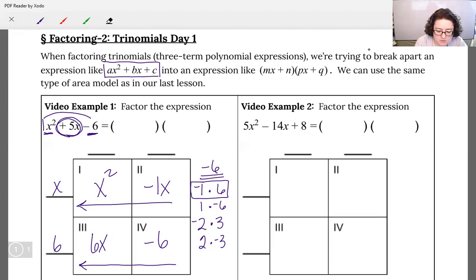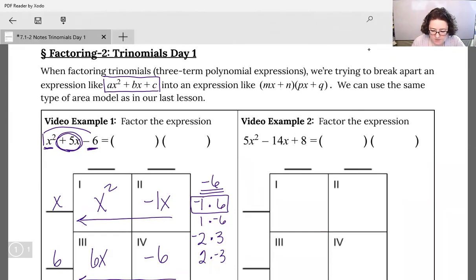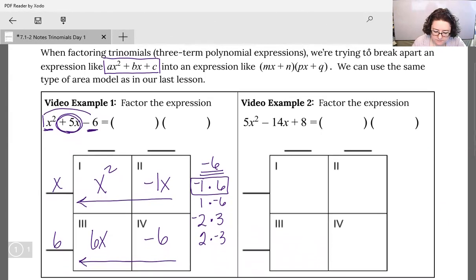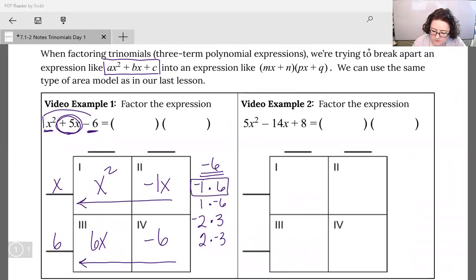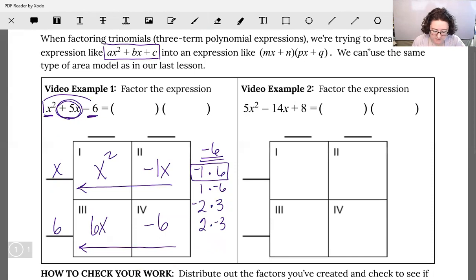Now I'm going to do each column. So between x squared and 6x, what's in common? Well, they both have an x. So that's my GCF.